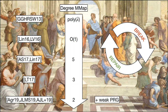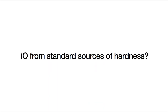At the moment, basing indistinguishability obfuscation on standard assumptions is one of the most prominent open questions in cryptography. The question we tackle in this work — which is perhaps less ambitious — is: can we construct indistinguishability obfuscation from standard sources of hardness? That is, can we take well-established primitives and combine them in some unorthodox way such that they are enough to construct indistinguishability obfuscation itself?